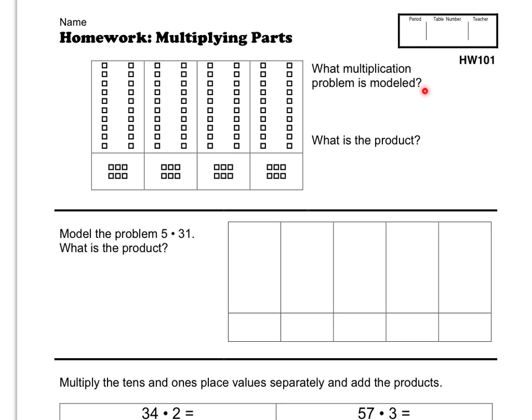It's asking us what multiplication problem is modeled. So we have to think how many groups of how many boxes do we have. We'd be multiplying the groups that we have times how many boxes we have. So you're going to count how many groups you have here and then you're going to count how many boxes you have total and that will be the multiplication problem that's modeled. Then you're going to write the answer there.